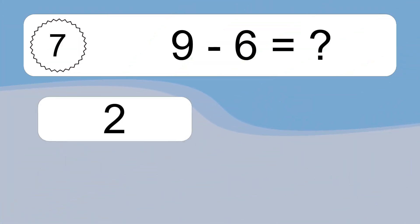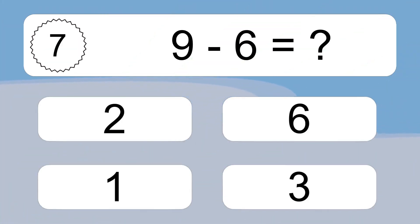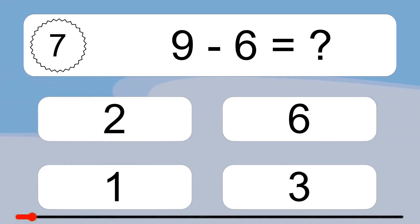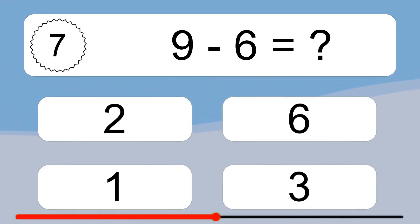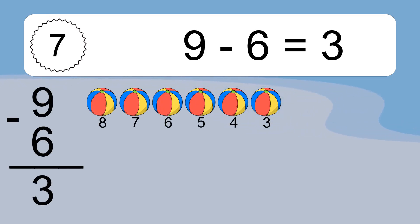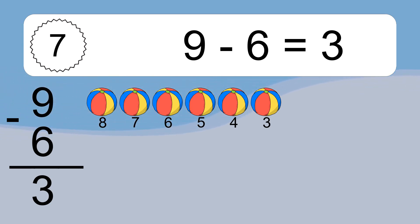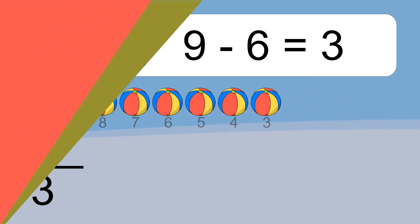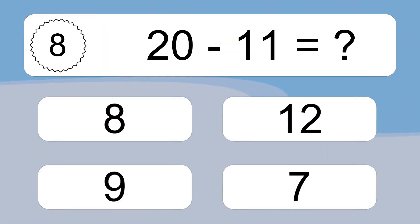9 minus 6 equals what? 9 minus 6 equals 3. Let's count it: 8, 7, 6, 5, 4, 3.